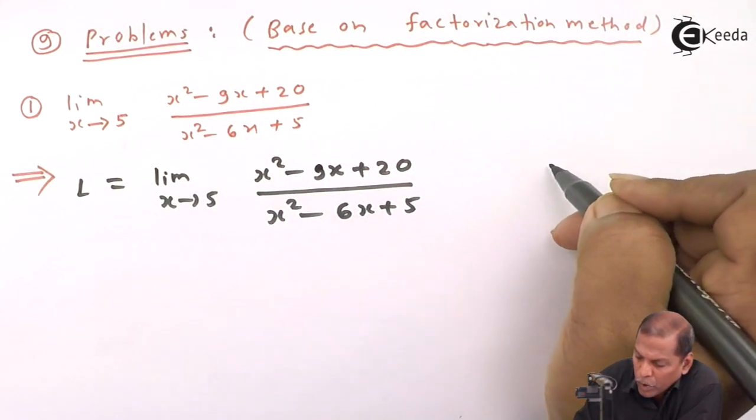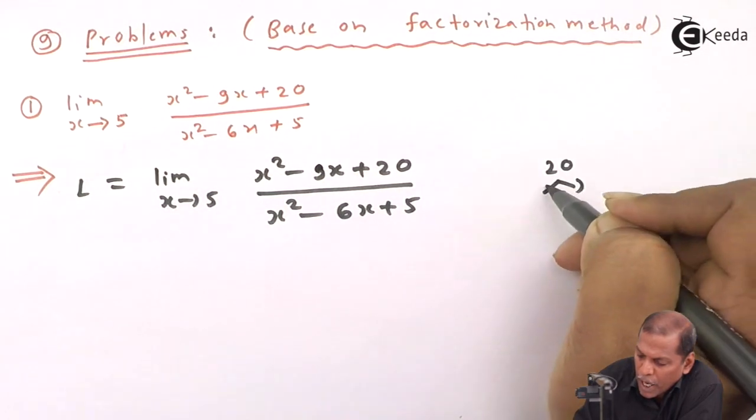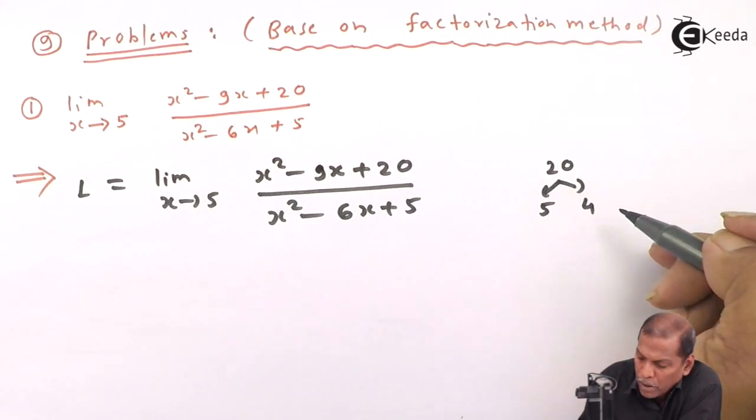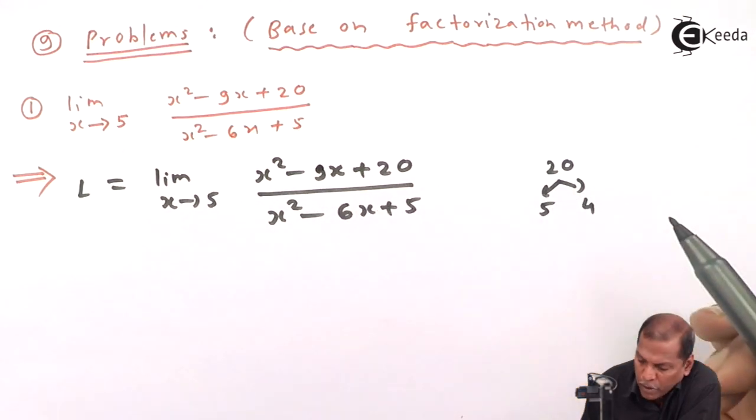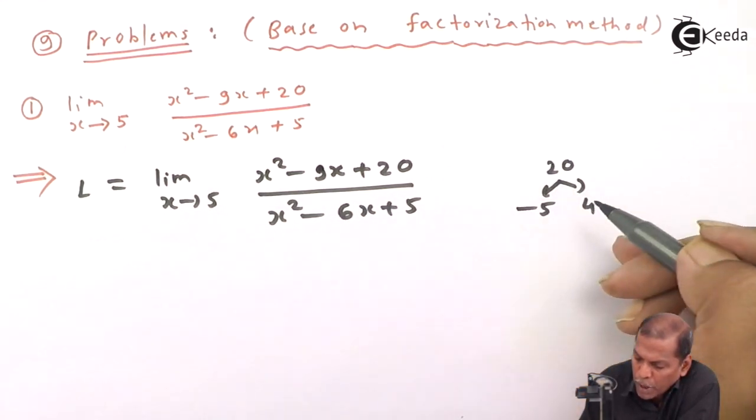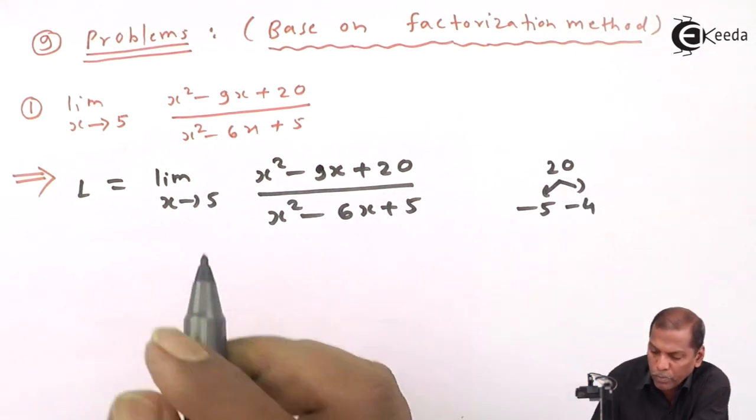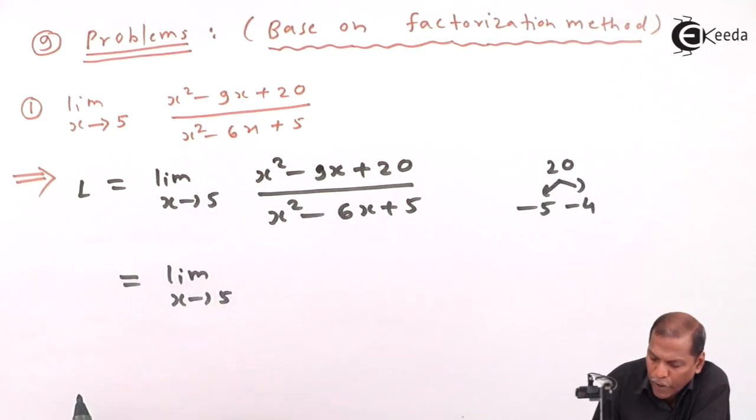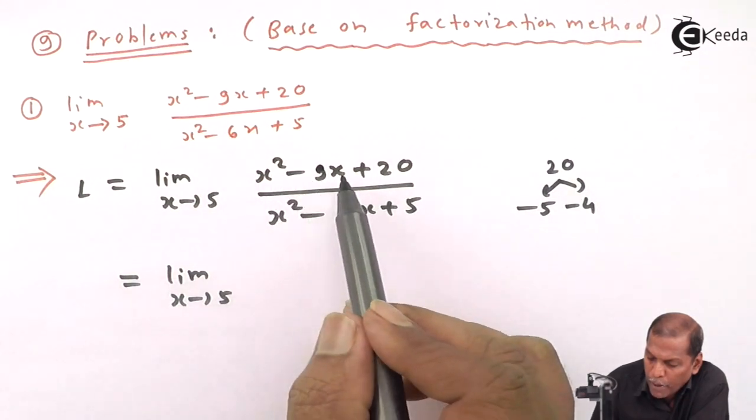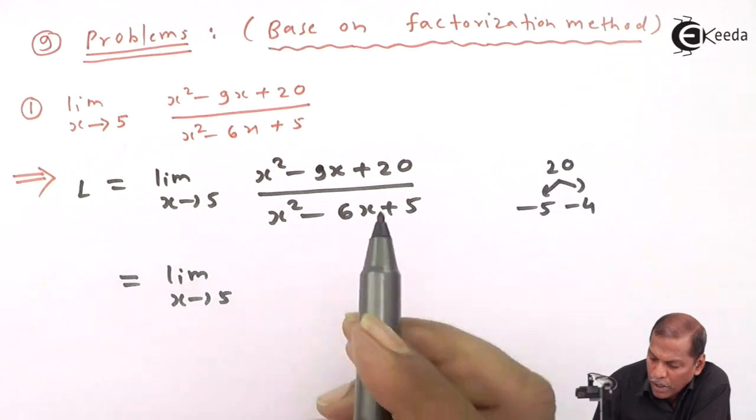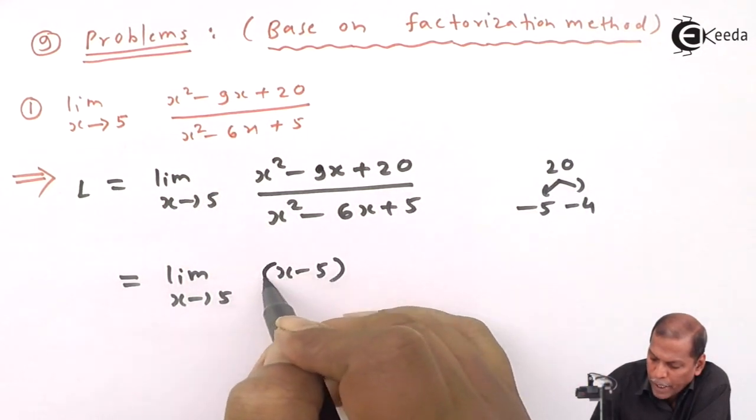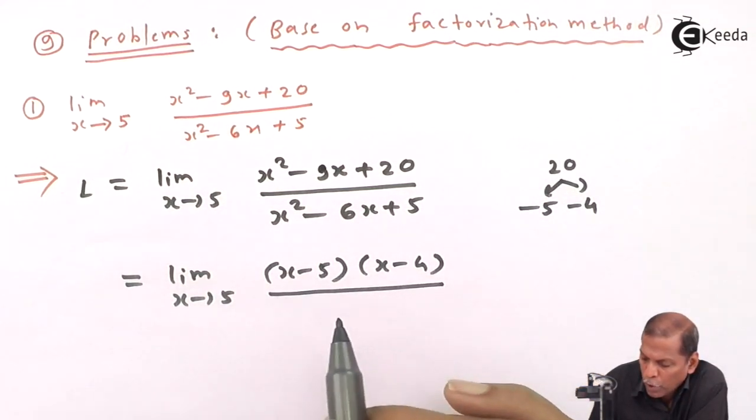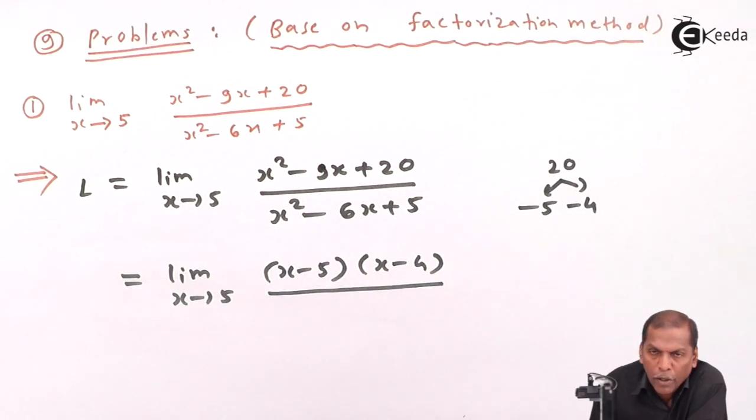20 can be factorized as 5 into 4 so that we get -9 in the numerator, so the signs must be -5 and -4. So this equals limit as x approaches 5. Now, x² - 9x + 20 can be factorized as (x - 5)(x - 4), then divided by the denominator.